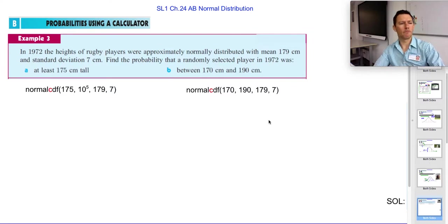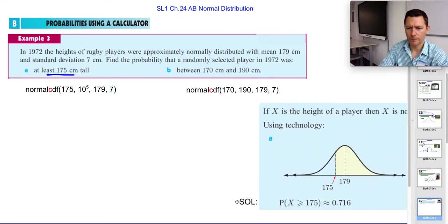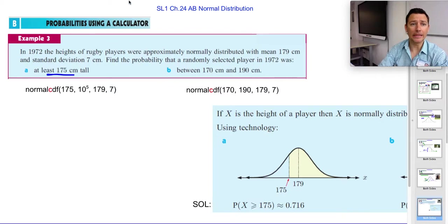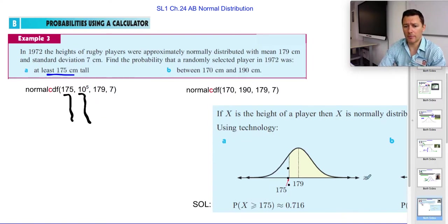All right, so here's a problem from the text. There's rugby players normally distributed height. Here's the mean and standard deviation. Find the probability that the player was at least this tall. So this is a range. It's a range between infinity and this spot. So if you were thinking of picturing this, well, I guess it's right here. If you're picturing this one, we want at least. It means I want everybody who's taller than this. So we want all of this. So we can just throw in what we have. I know 175 is the value I'm looking for, our lower limit. I put in a big number for our upper limit, 10 to the 5th, because I want to go that way almost to infinity, and there's no infinity button. So I put something really big.